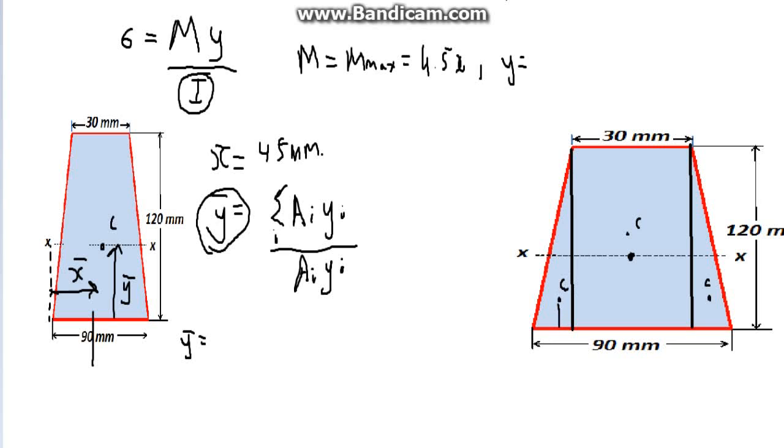So to get to the centroid of a triangle, you need to go one-third the distance from the base. So that's one-third multiplied by 120, which is 40, and half, obviously, for a rectangle to get to its centroid, which is 60. So that's 40 and that's 60.